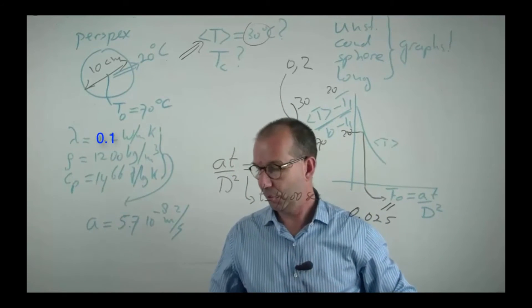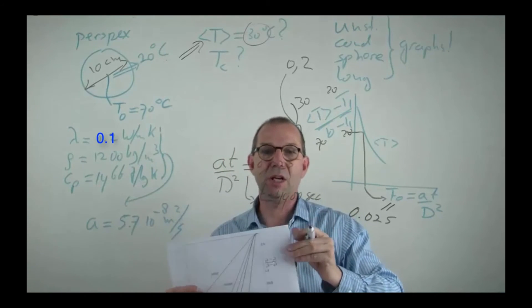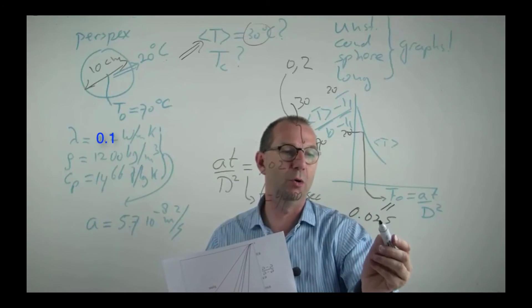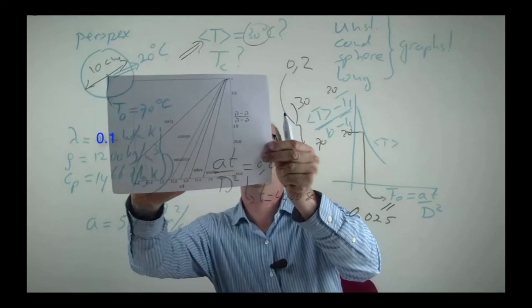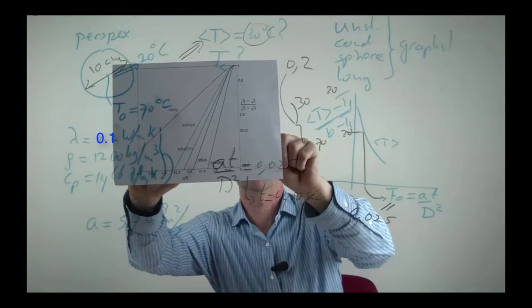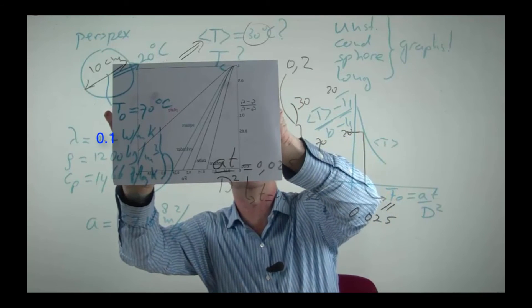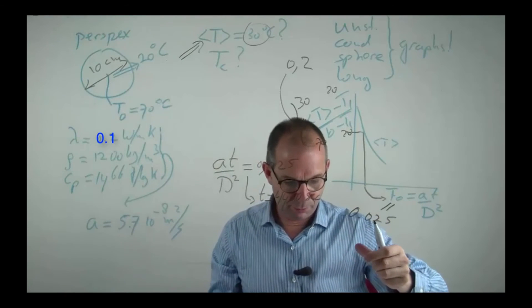Now for the center temperature. For that I need the second graph. The second graph I need to read at the dimensionless time 0.025, because then the average temperature is 30 degrees. If I do that, now I do it the other way around, I read off here, find the line for the center line and see that its value is 0.5.